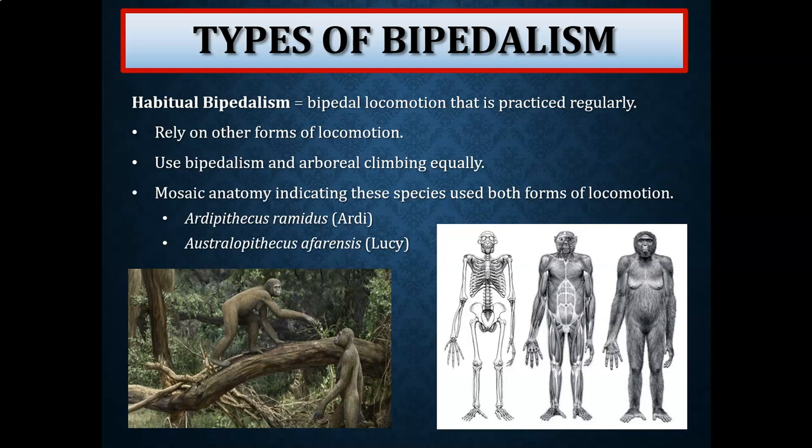The pelvis top half is much more like a biped, the bottom half more like a quadruped. The femur is longer and angled inward towards the knee — what we call the bicondylar angle. This fossil is truly a very mosaic transitional fossil.